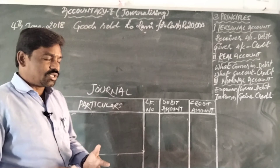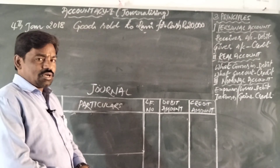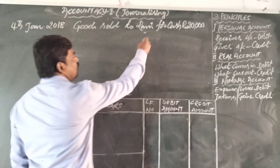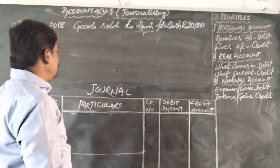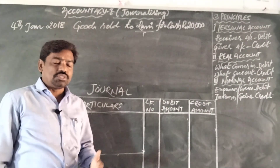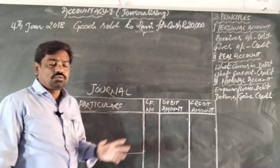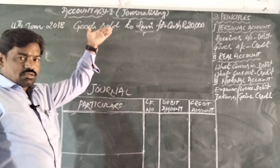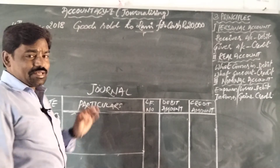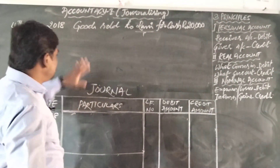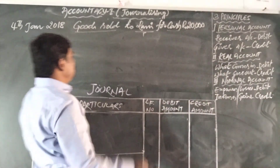To find the aspects, we ask questions in our mind. First question: is there any name in the accounting transaction? Yes — Rani is the name. Underline it; it is one aspect. Second question: is there any income or expenditure? No — simply ignore it. Third question: is there any asset? Yes — goods is an asset, and cash is also an asset.